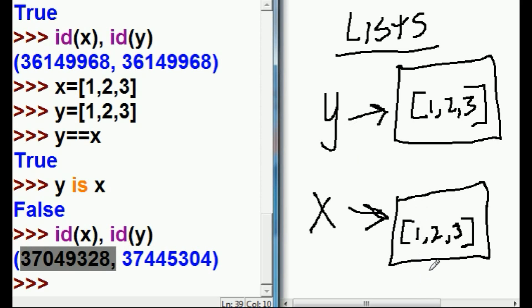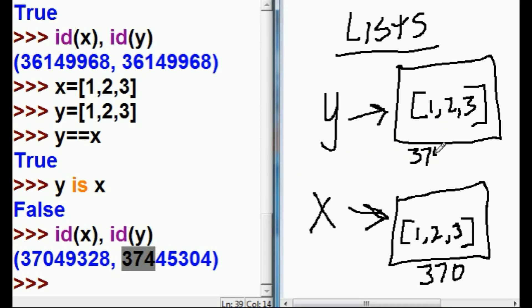x was the 37049968 guy. And y is the 37445304 guy. Wow.